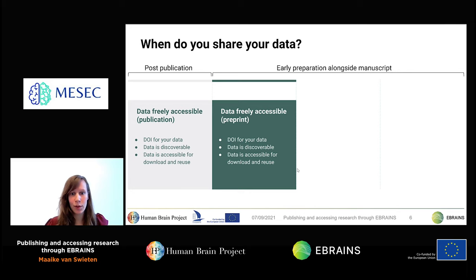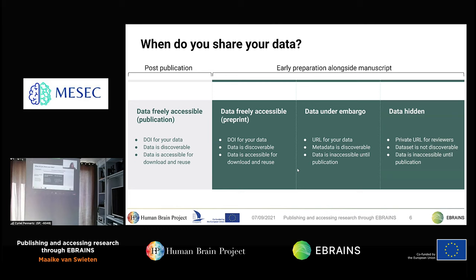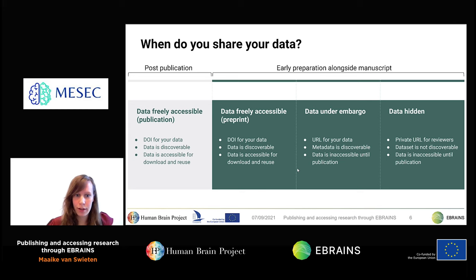eBrains offers three solutions for sharing your data alongside a manuscript. The first option is to make data freely accessible after publishing a preprint, linking the data directly to your paper. The second option is to make data discoverable but not accessible until the manuscript is published — your data will be under embargo but you receive a URL, and a DOI once the embargo is lifted. The third option is to hide data and metadata until publication, with a private temporary URL for reviewers, and a DOI once the manuscript is accepted.